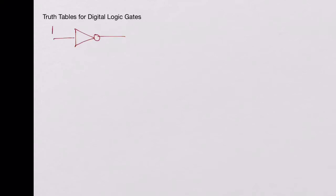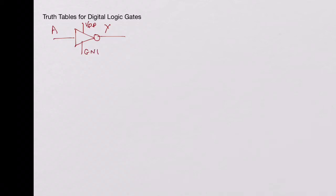Let's start with an inverter. Symbolically, an inverter is represented with an input A and an output Y. What we do not show in digital circuits is the power and ground for this inverter — they are usually connected to VDD and ground, but we don't show it in the symbol. We just show the inverter with A and Y, taking VDD and ground for granted.